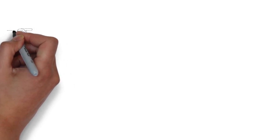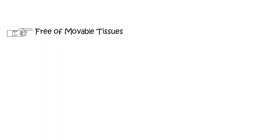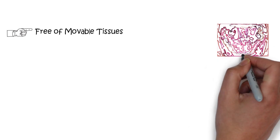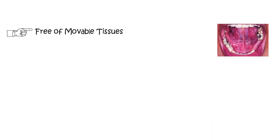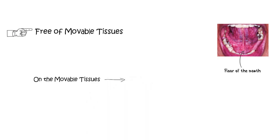Along with having a rigid design, the major connector should be free of any movable tissue. A classic example of movable tissue is the floor of the mouth. Including a major connector directly on a movable tissue like the floor of the mouth would be very damaging to the movable structures.